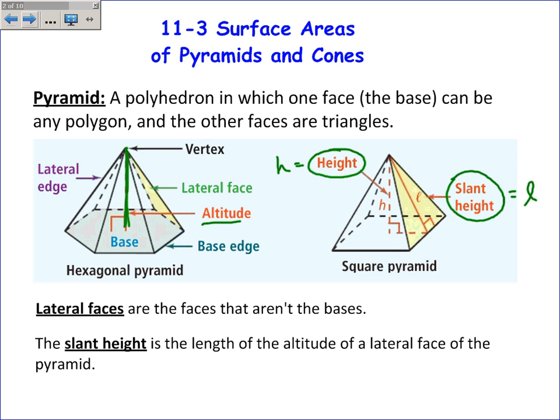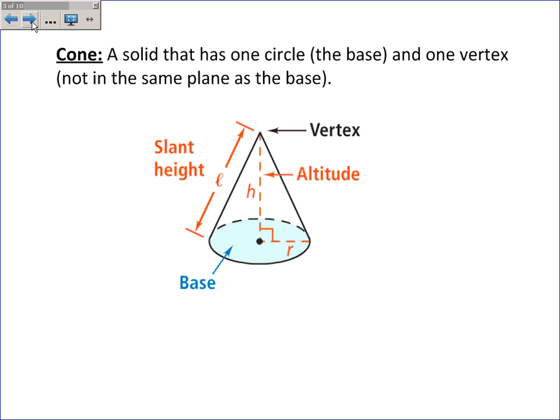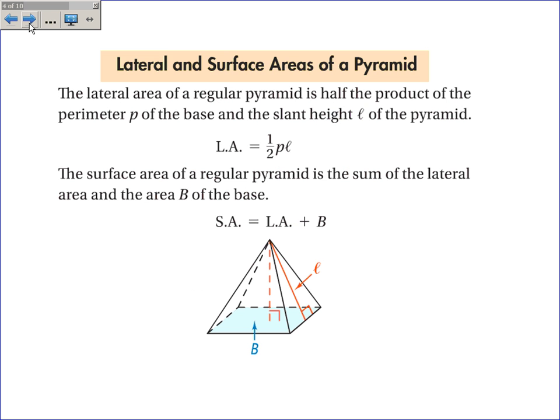By the way, we'll use the height in volume, and we'll use the slant height in surface area. A cone is very much like a pyramid, except the base is a circle instead of a polygon. So it's a solid that has one circle, the base, and one vertex, not in the same plane as the base. It still has a slant height, an altitude, and the length of that altitude is called the height, just like the pyramid.